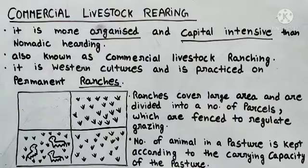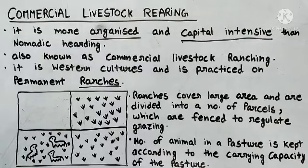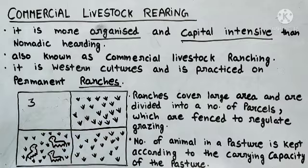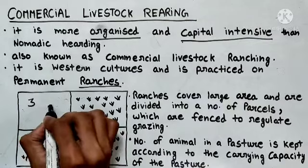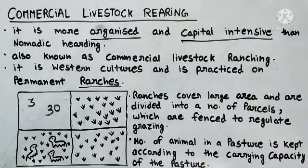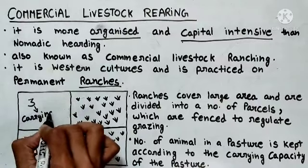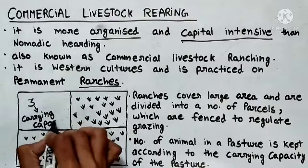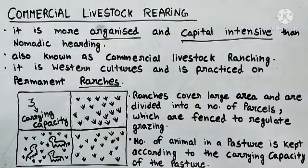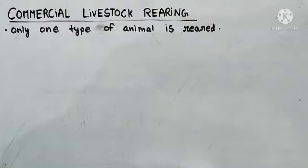Ranches ke upar fencing isliye ki jaati hai taaki hum animals ki grazing ko regulate kar sakein. Aur har ek pasture mein us pasture ki carrying capacity ke hisaab se animals ko rakha jaata hai. Jaise is waale ranch ki carrying capacity hai 3 animals ki — matlab is ranch ke upar sirf 3 hi jaanwaron ki ghaas hai, toh hum iske upar 30 animals nahin bandh sakte. Is parcel mein itni ghaas bhi nahin hai jo in 30 jaanwaron ka pet bhar sake; upar se is pasture ke andar bahut zyada bheed ho jaayegi.